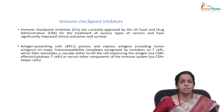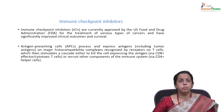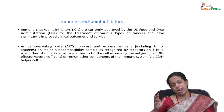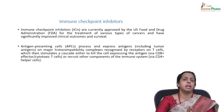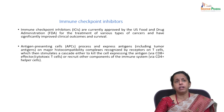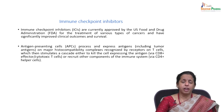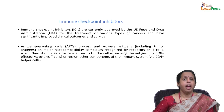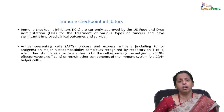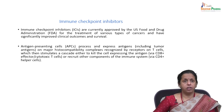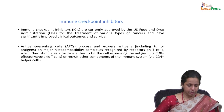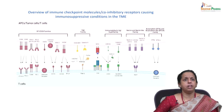Antigen presenting cells process and express antigens, including tumor antigens — such as tumor-specific antigens or neo-antigens. These are recognized on MHC complexes by receptors on T cells, stimulating a cascade to kill antigen-expressing cells via CD8 cytotoxic T cells, or to recruit other immune components via CD4 helper T cells. This gives a complete overview of the system.